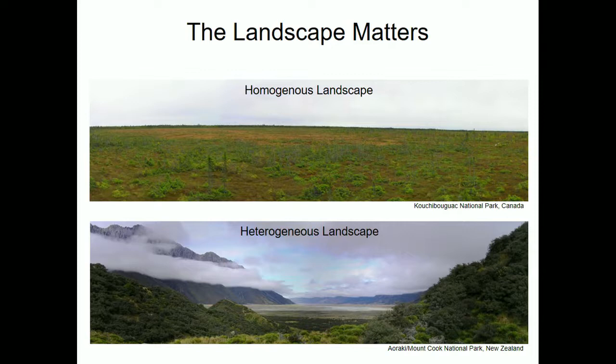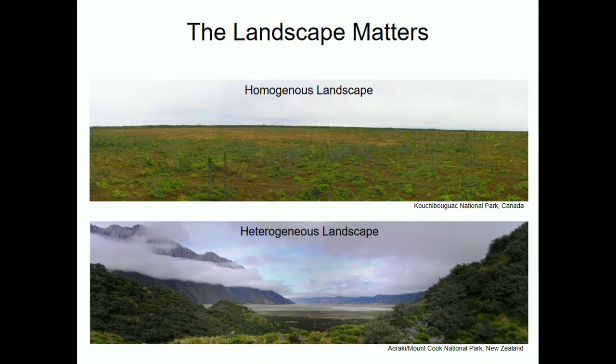Take two landscape examples: a homogeneous blanket bog — from a human perspective, pretty homogeneous, so straight-line distance in meters would be appropriate. But many landscapes, like the picture at the bottom, have varying terrain — one's ability to move through that landscape varies dramatically.